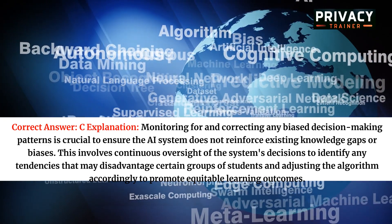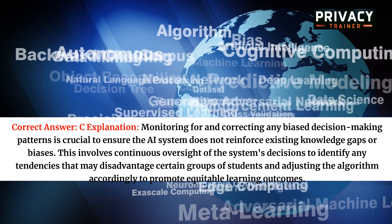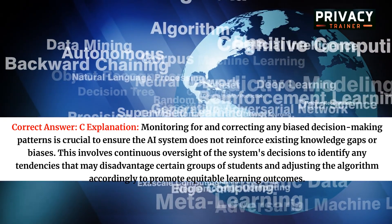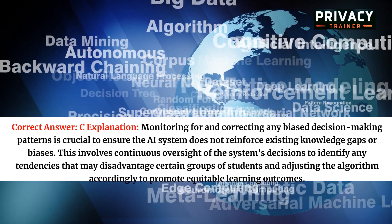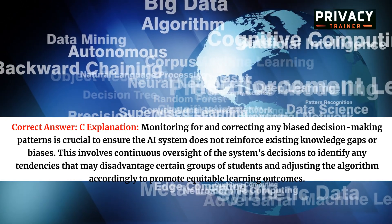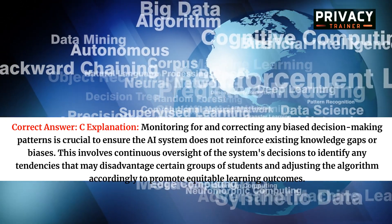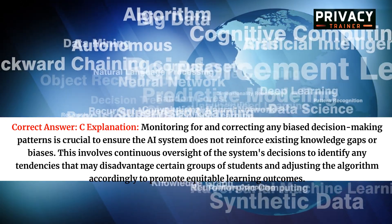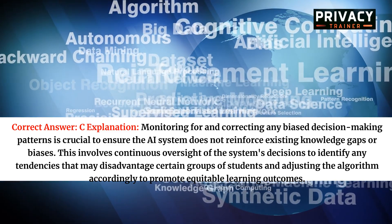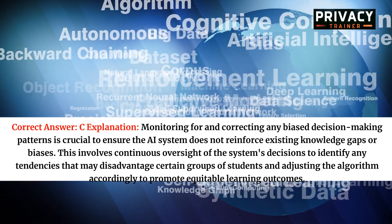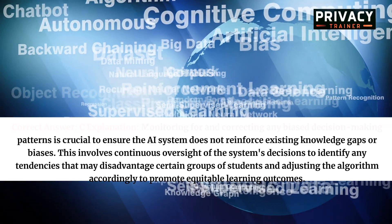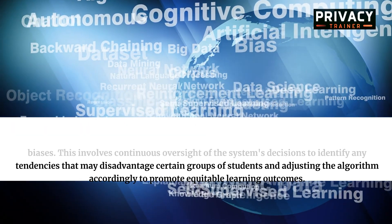Correct answer: C. Monitoring for and correcting any biased decision-making patterns is crucial to ensure the AI system does not reinforce existing knowledge gaps or biases. This involves continuous oversight of the system's decisions to identify any tendencies that may disadvantage certain groups of students and adjusting the algorithm accordingly to promote equitable learning outcomes.